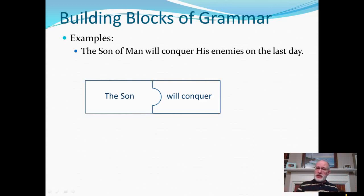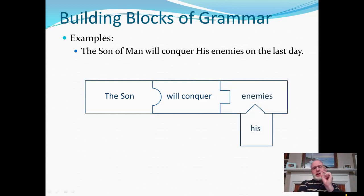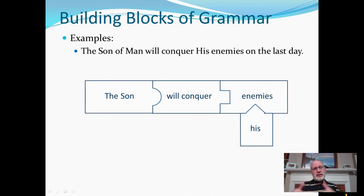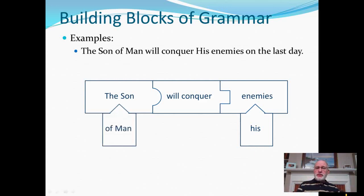Now we need to test to see whether we have a complement. The who or what question: the son of man will conquer who or what? His enemies. But 'his' is a modifier for the word 'enemies,' so we want to account for the grammatical relationship where 'his' is the modifier. And now we know what to do with the phrase 'of man' — same thing. 'Of man' is a modifier for the word 'son.' So we'll diagram it as such.